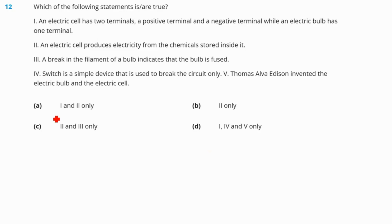Question number 12. Which of the following statement is or are true? First statement says an electric cell has two terminals, a positive terminal and a negative terminal while an electric bulb has one terminal. No. This is wrong. This is a false statement. An electric cell produces electricity from the chemical stored inside it. True. A break in the filament of bulb indicates the bulb is fused. True. Switch is a simple device that is used to break the circuit only. No. It is a simple device that not only breaks the circuit but also creates a circuit also. So this is also false. Thomas Alva Edison invented the electric bulb and the electric cell. False. So our correct answer is option number C.